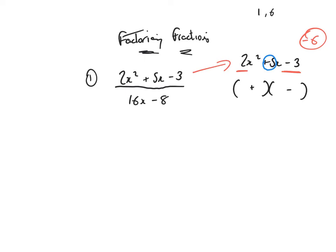Combinations for 6 are 1 and 6, 2 and 3. Which pair can organise to get plus 5? Be careful with this one — the signs are different, so 2 and 3 wouldn't work, even though on first inspection it looks as if it might. It needs to be 1 and 6: plus 6 and minus 1 to add and give 5. Drop 2x into both brackets.